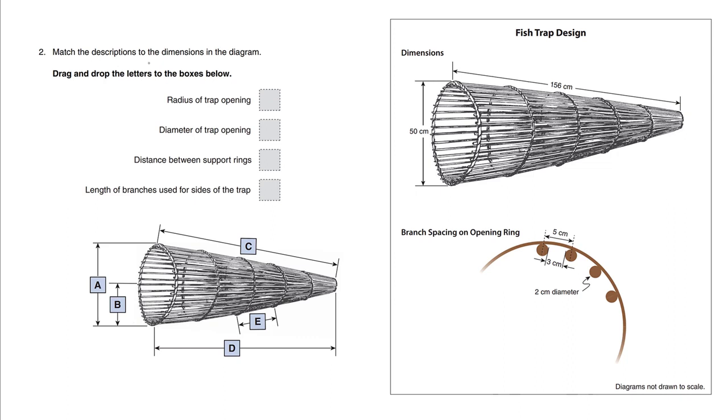Let's match the descriptions to the dimensions in the diagram. Where is the radius of the trap opening? Here's a circle, so the radius is clearly B. Where's the diameter? The diameter is double the radius, which is clearly A.